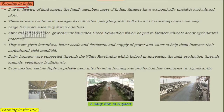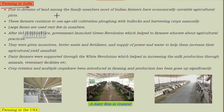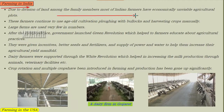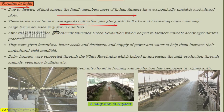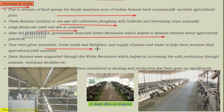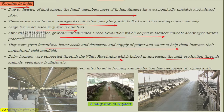Farming in India: Land is divided among family members, and most Indian farmers have economically small and unviable agricultural plots. These farmers continue to use old cultivation methods with bullocks and harvest crops manually. After independence, the government launched the Green Revolution, which helped farmers learn better agricultural practices. Farmers were given incentives, better seeds, fertilizers, and supply of power and water to increase agricultural yield. Dairy farms were also supported, increasing milk production through veterinary facilities. Crop production and multiple cropping have been introduced, and production has gone up significantly. This picture shows a dairy farm in Gujarat.